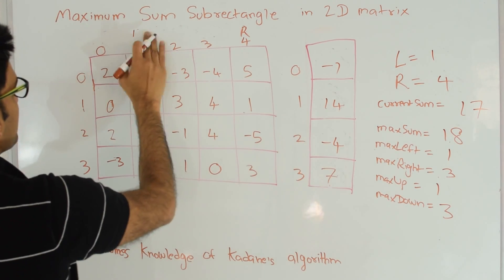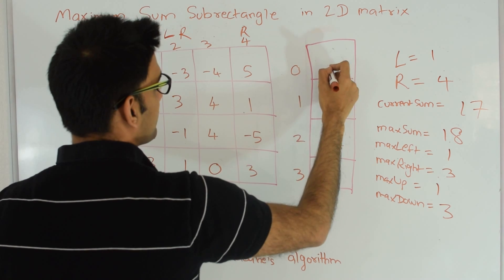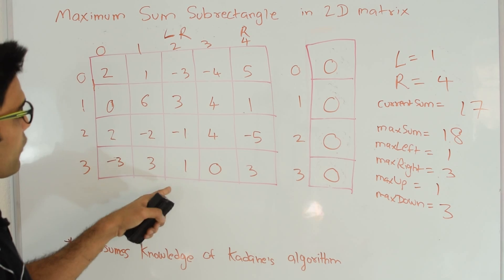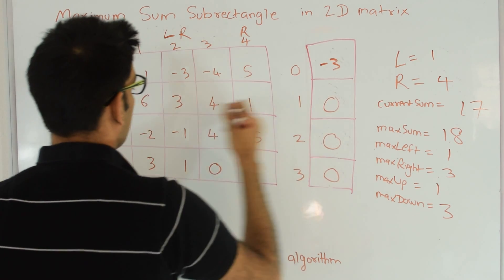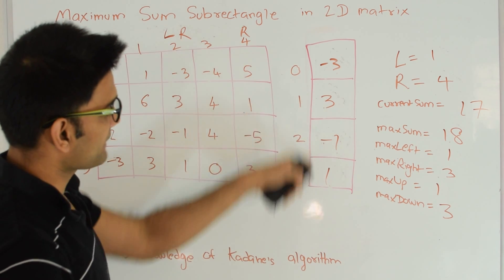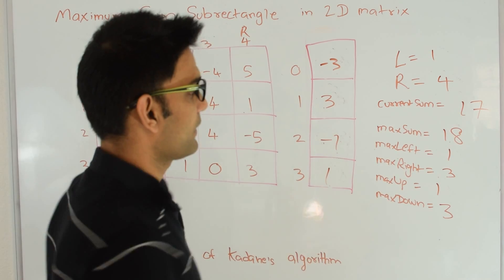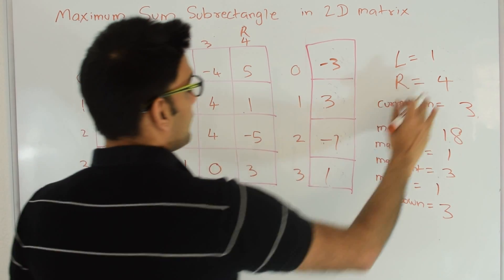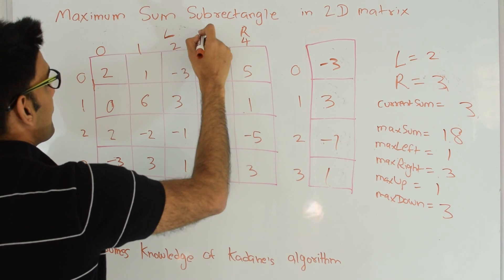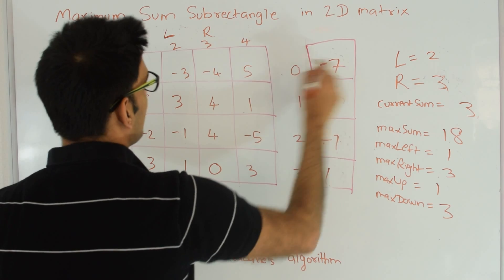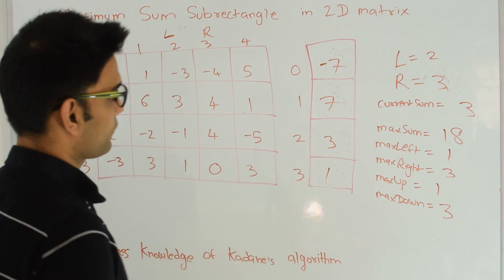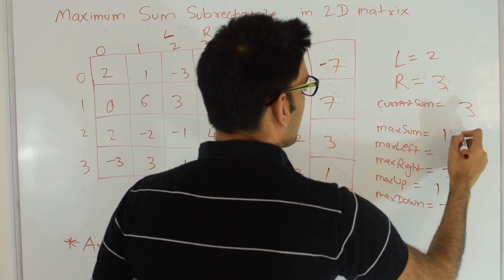Since right reached the end, we reset: left becomes 2, right becomes 2, temp array reset to 0. We copy column 2: -3, 3, -1, 1. Max sum using Kadane's is 3, not greater than 18. Right becomes 3. We add column 3: -3+(-4)=-7, 3+4=7, -1+4=3, 1+0=1. Maximum sum: 7+3=10, 10+1=11. Current sum 11 is not greater than 18, so we touch nothing.